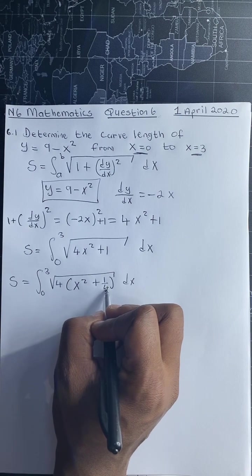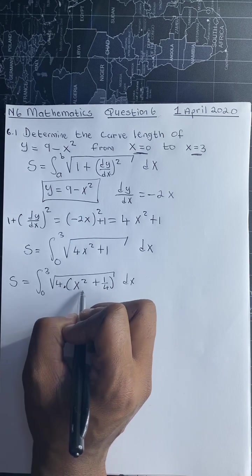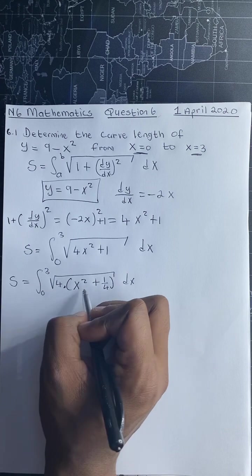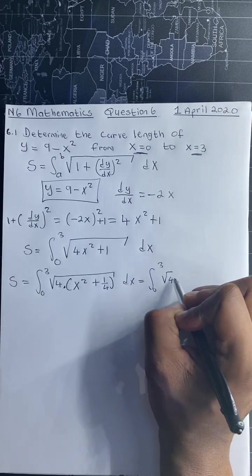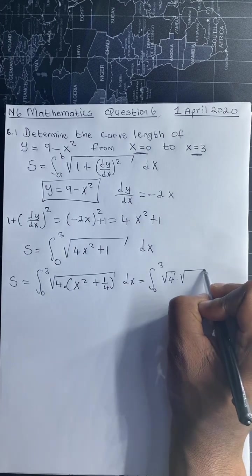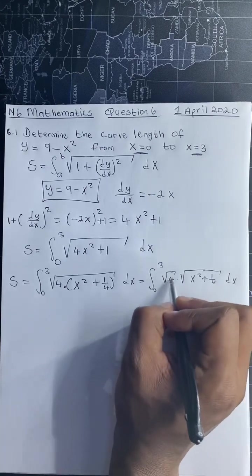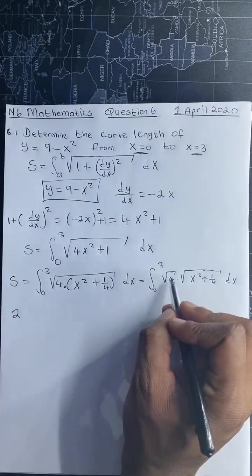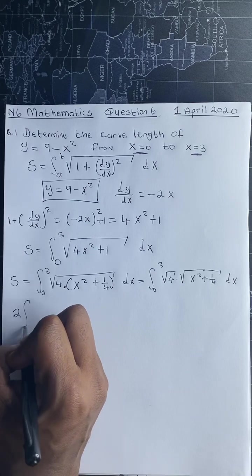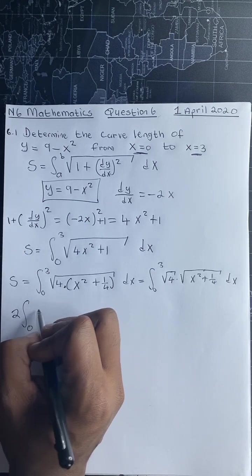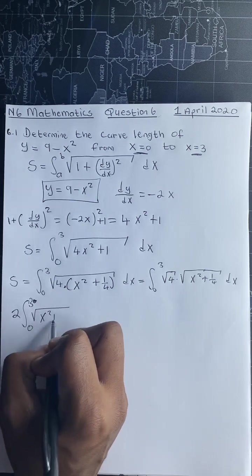We have 1/4 inside so that distributing the 4 back gives 4 × (1/4) = 1. We have a multiplication between the 4 and the parenthesis (x² + 1/4), so we separate them: square root of 4 multiplied by square root of (x² + 1/4) dx. The square root of 4 is 2, which is a constant we can take outside the integral. So we have 2 times the integral of sqrt(x² + 1/4) dx.